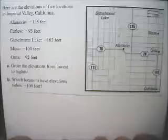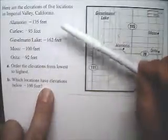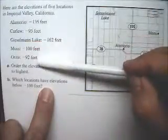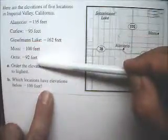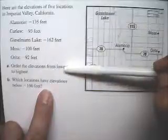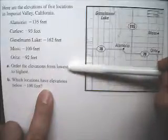Hello, this is Equations and Inequalities, Real Numbers and Number Operations, Example 7. This example gives us the elevations of these five places, and the first question is to get them in order from lowest to highest.